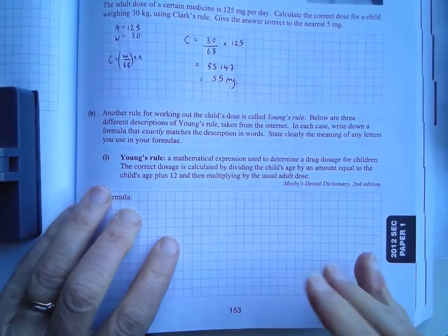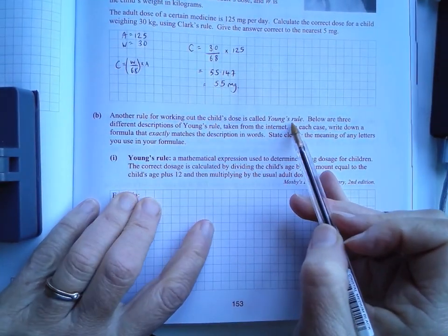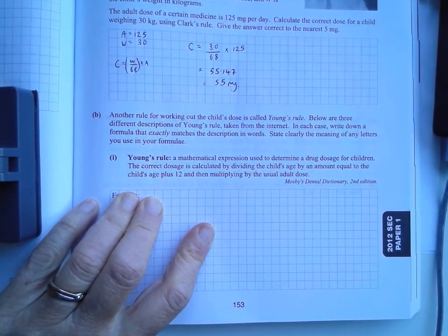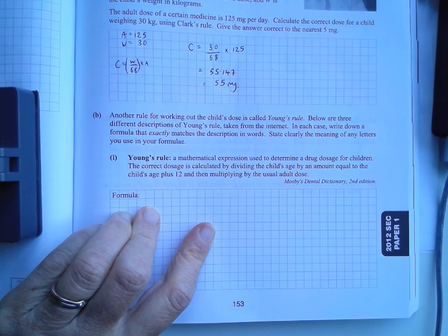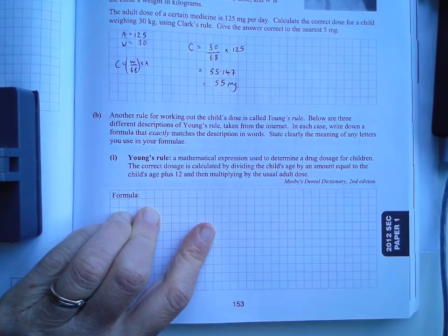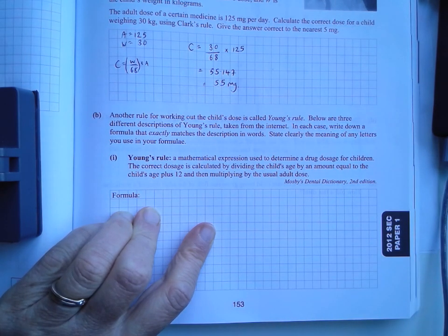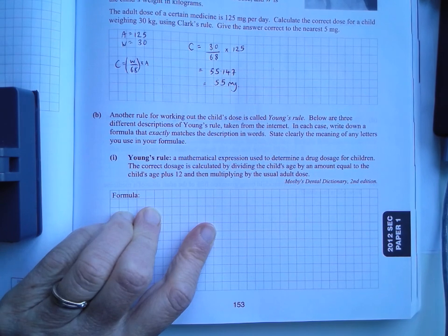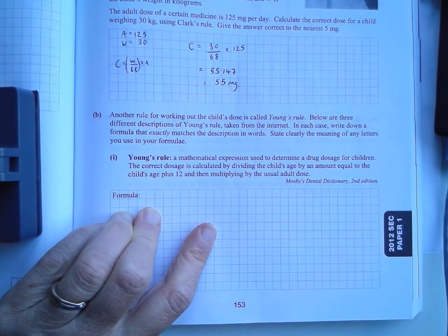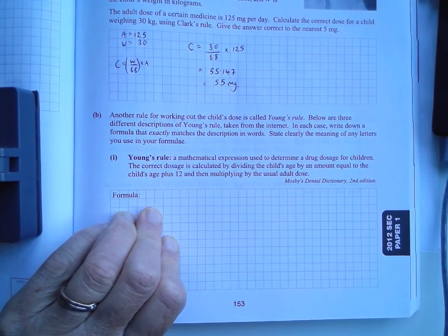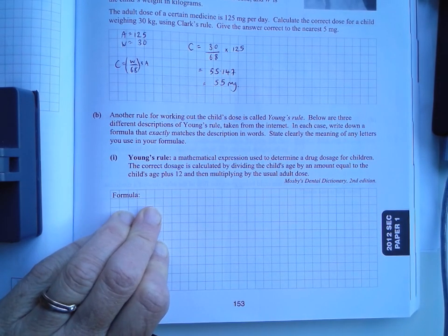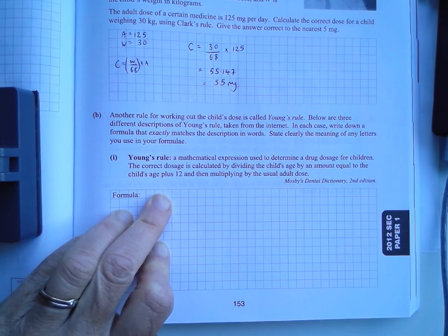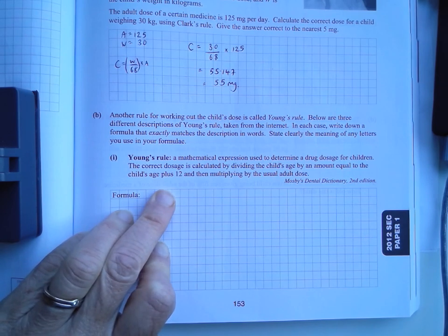Next one. Another rule for working out the child's dose is called Young's rule. Below are three different descriptions of Young's rule taken from the internet. In each case, write down a formula that exactly matches the description in words. In other words, they're asking you to translate these words into formulas. Now, this is quite hard. So if you struggled with this, don't worry. Let's see whether we can get any help from it.